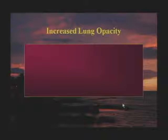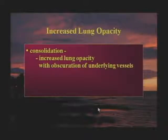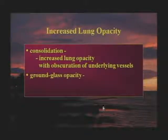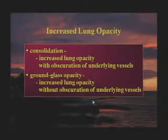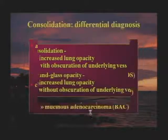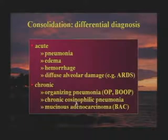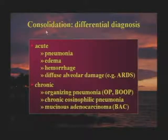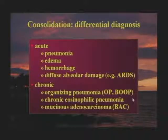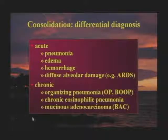Now back to high-res CT findings. Consolidation means increased lung opacity with obscuration of underlying vessels, distinguished from ground glass opacity where the lung is increased in attenuation but vessels remain visible. If it's entirely white, it's consolidation. The differential for consolidation depends on duration of symptoms. If symptoms are acute, think pneumonia, pulmonary edema, pulmonary hemorrhage, or diffuse alveolar damage (the histology of ARDS). If consolidation occurs with chronic symptoms — six weeks or more — think organizing pneumonia, chronic eosinophilic pneumonia, and invasive mucinous adenocarcinoma of the lung (formerly diffuse bronchioloalveolar carcinoma or BAC — BAC is a term being replaced).